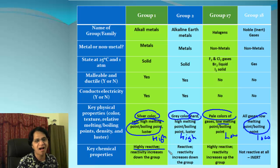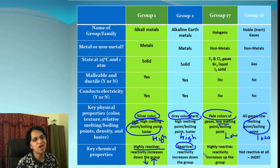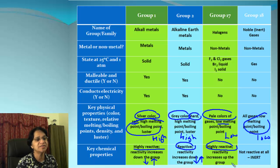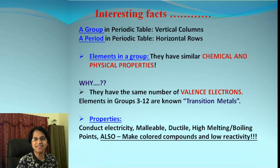Now let's turn to chemical properties. Alkali metals are extremely highly reactive, and as we go down in the group, reactivity increases. Alkaline earth metals are still reactive but not as reactive as alkali metals — reactivity still increases going down the group. Halogens are highly reactive just like alkali metals, but for halogens reactivity increases going up in the group. Finally, inert gases — inert means no reaction — so these are not reactive at all.